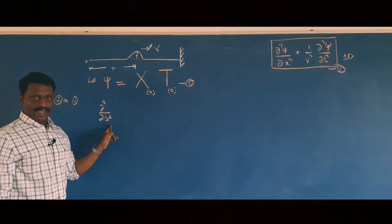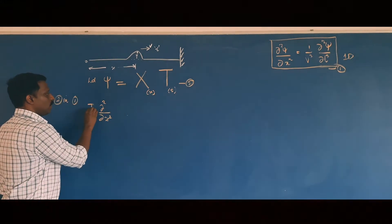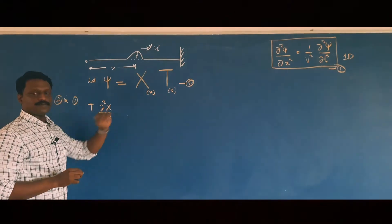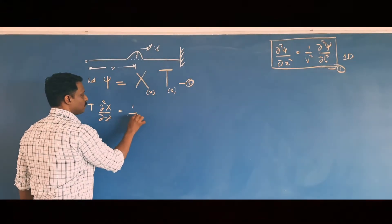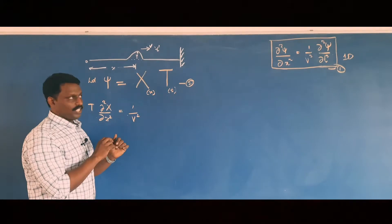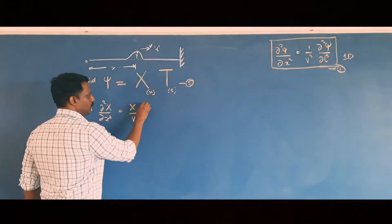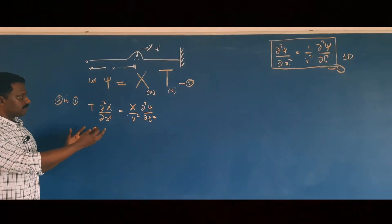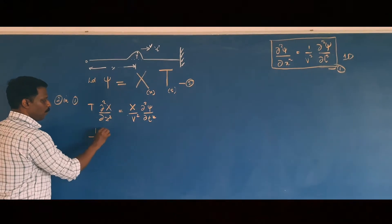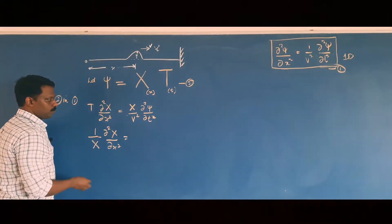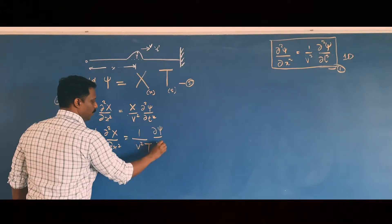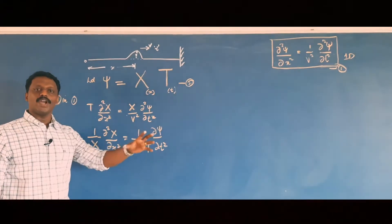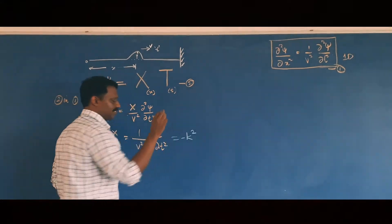Substituting ξ = X·T into the differential equation: since the derivative is with respect to x, T is a constant and can be taken outside, giving T·∂²X/∂x² = (1/v²)·X·∂²T/∂t². Rearranging so that variables are separated: (1/X)·∂²X/∂x² = (1/v²T)·∂²T/∂t². Setting both sides equal to the constant −k²: equation 3 gives ∂²X/∂x² = −k²X, and equation 4 gives ∂²T/∂t² = −k²v²T.